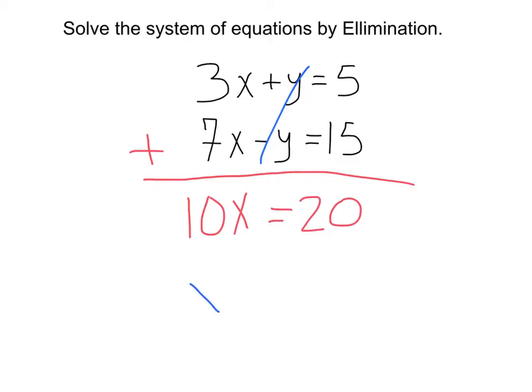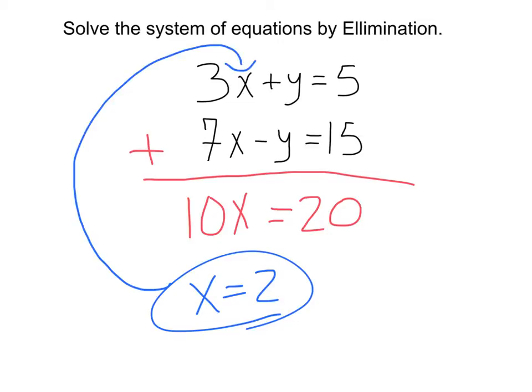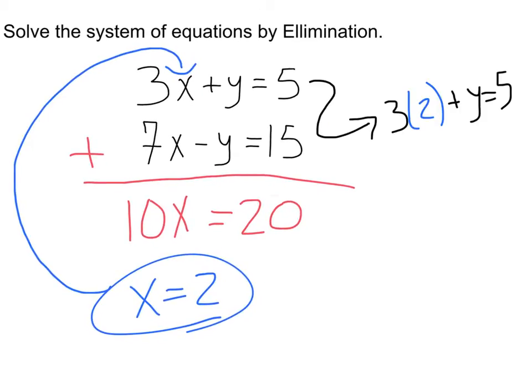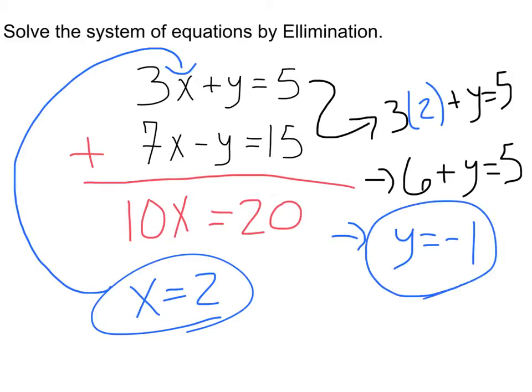Solving from there, dividing by 10, we'll get x equals 2. Now, just like we did in substitution, we can take this x equals 2 and plug it right in to solve for our other variable. That's going to give us 3 times 2, plugging that 2 in for this equation right here. Plus y equals 5. Solving from there, 6 plus y equals 5, times the 3 and the 2. And finally, we'll get y equals negative 1.